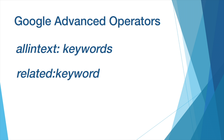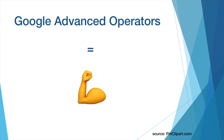There are literally dozens of advanced operators available in Google, and in this tutorial we've looked at two examples that are especially useful for researchers. Using these advanced operators can make your searches more productive and efficient.